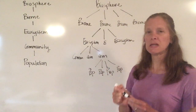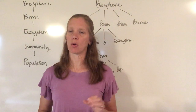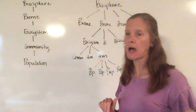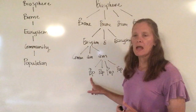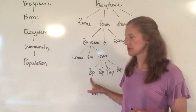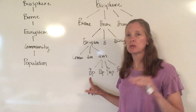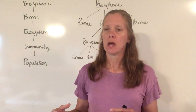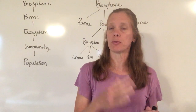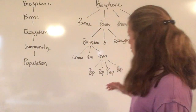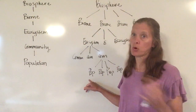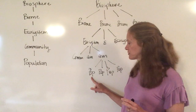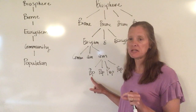Let me give you an example of what that might exactly look like. I'm going to start at the bottom and work my way back to the top. A population might be a group of wildebeests living in the African savanna. A population is going to include only one species. A species is a group of organisms that can interbreed with one another and produce viable offspring. So wildebeests are going to mate with wildebeests and make more wildebeests — it's only that one species we're talking about.